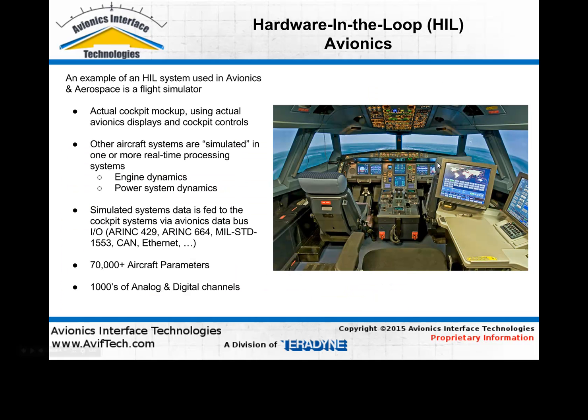If we look at an aircraft system example of using hardware-in-the-loop, a good easy-to-assess example is a cockpit flight simulator. In this case, we would have a real cockpit with real avionics displays, real controls, basically a mock-up of a cockpit inside a building. What we wouldn't have available is the rest of the aircraft — the engine systems, the hydraulic systems, the power distribution systems — all these other dynamic systems that are controlled and monitored from the cockpit during flight operations.